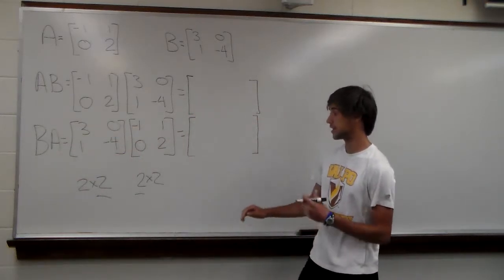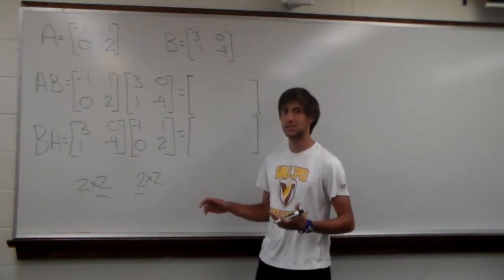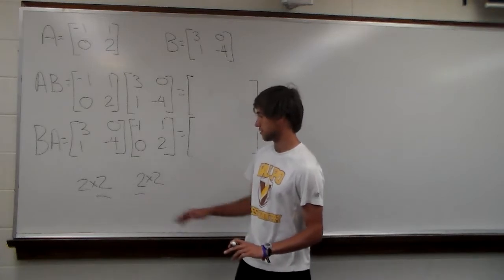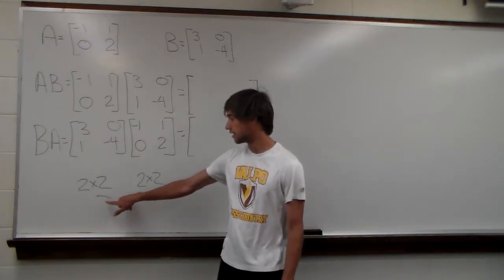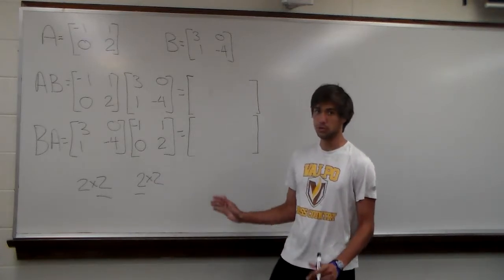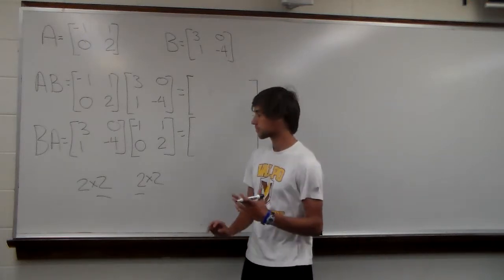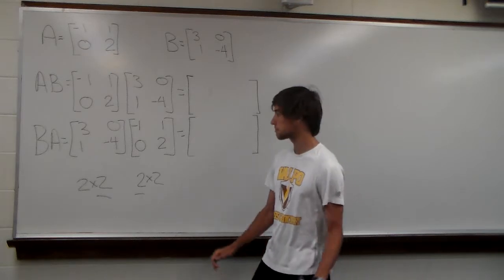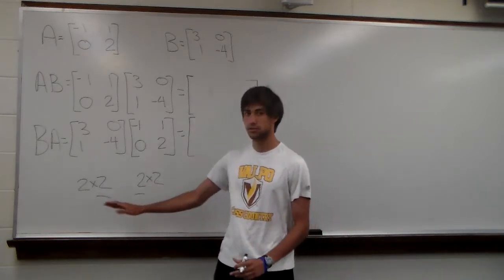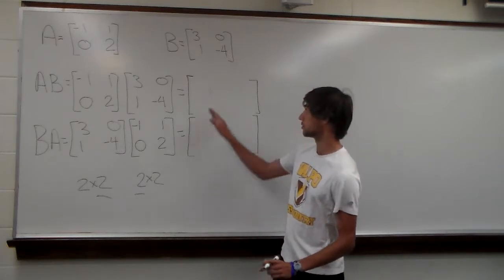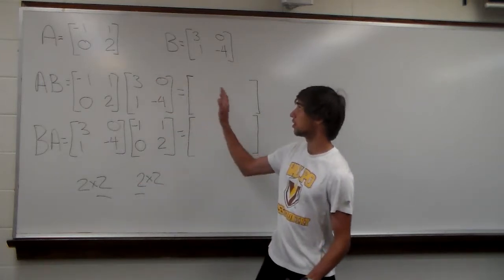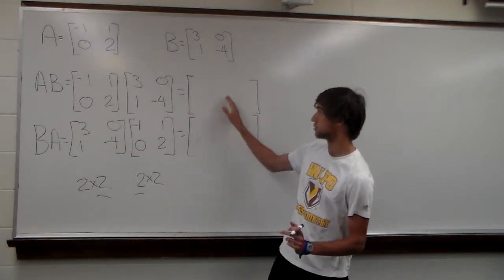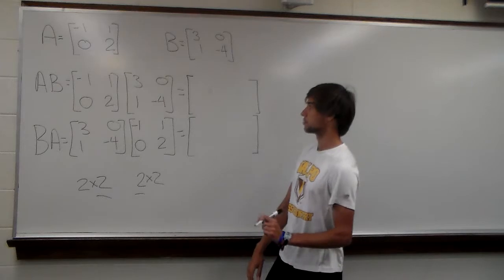First, we need to make sure we can actually multiply these two matrices together. We have a 2 by 2 matrix times a 2 by 2 matrix. We look at the inside numbers — since both are two, they match, so we can multiply them. Looking at the outside values, both are also twos, so we'll end up with a 2 by 2 result regardless of the order we multiply.